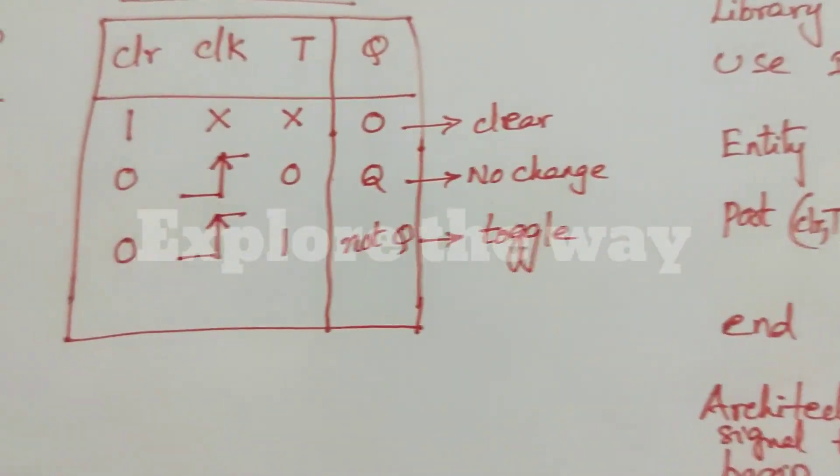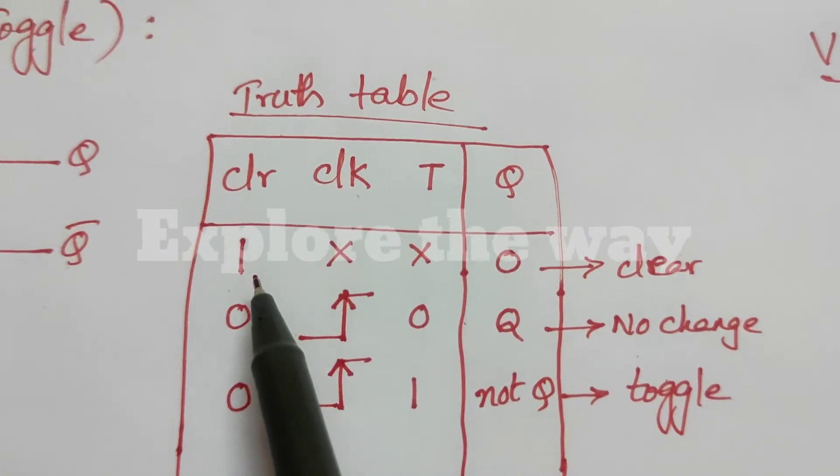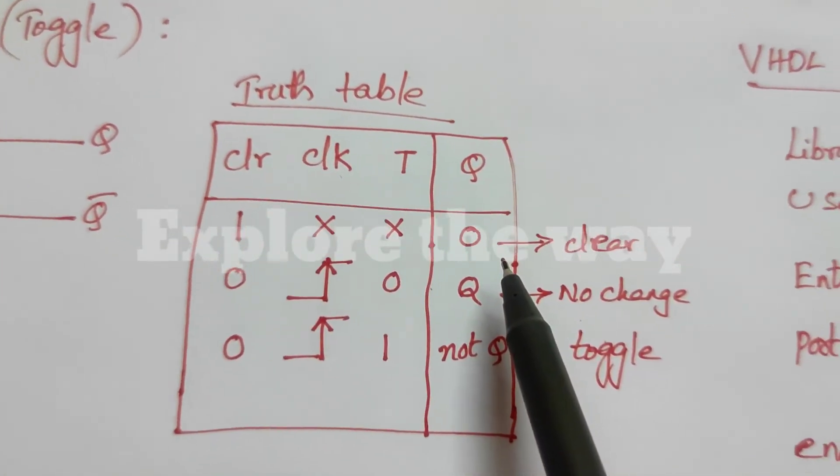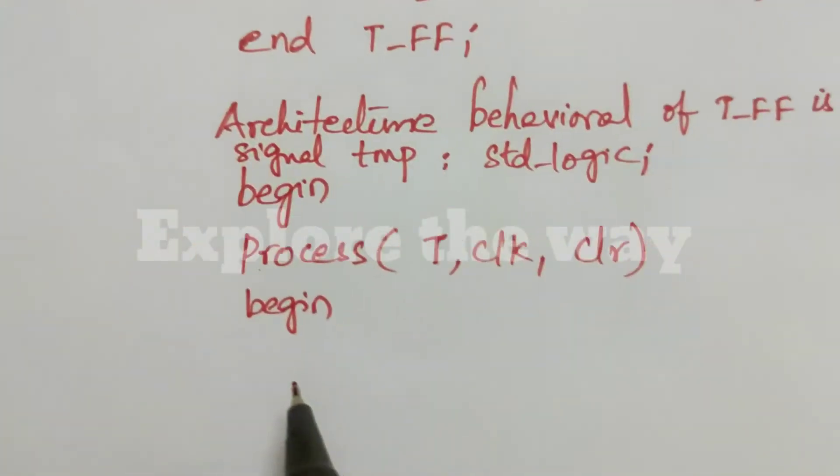Now, check the truth table. When clear is one, output will be zero. That means, it clears the flip-flop. Now, we will write the same.